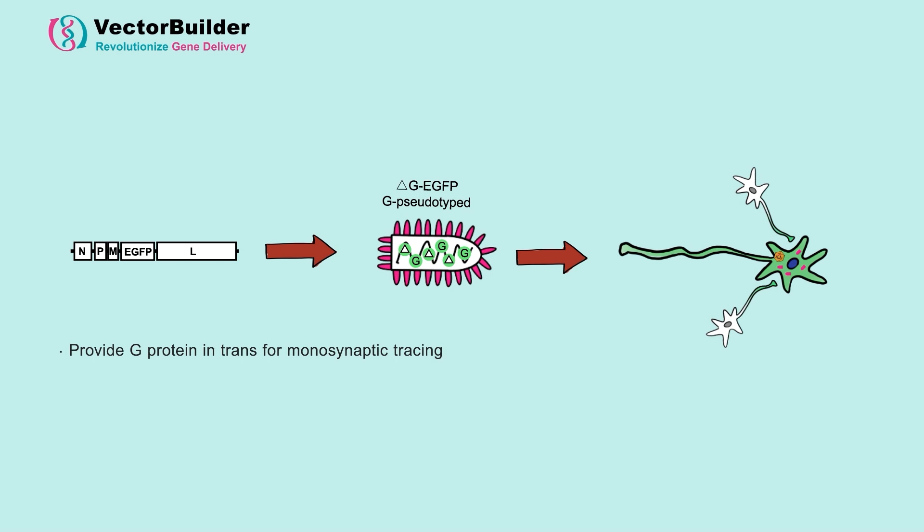Then, the rabies virus that gets produced can infect the presynaptic neuron. Once in the presynaptic or secondary neuron, there is no G gene, no glycoprotein, and therefore no further spread of the rabies virus.